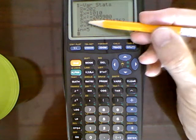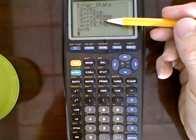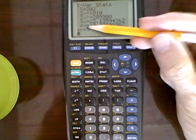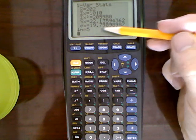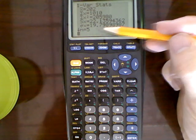S of X is the sample standard deviation, which is 22.1. Sigma of X would be the population standard deviation, which is approximately 17, or sorry, 19.8.